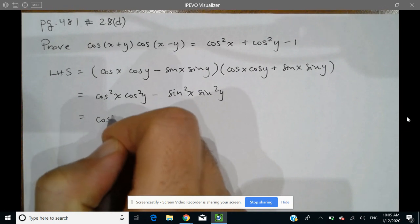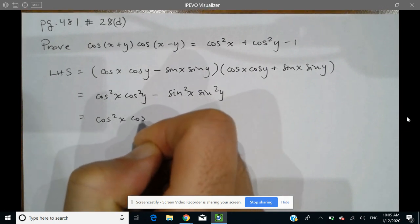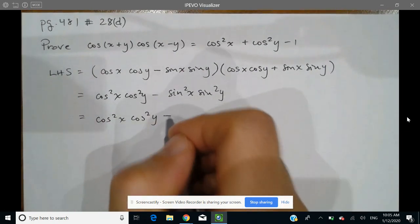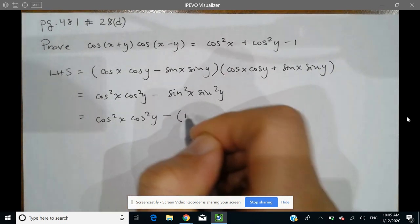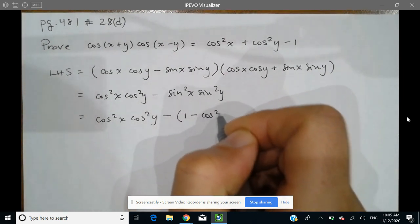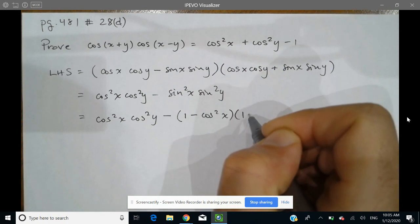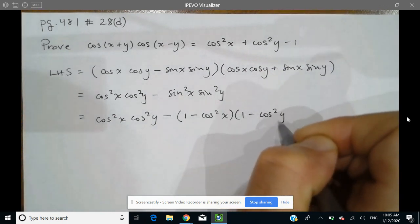So it makes sense to take these sine squareds and use the Pythagorean identity to turn them into cosine expressions. So this is cos squared x, cos squared y. I'm not going to change that, but I will change this into 1 minus cos squared x and this into 1 minus cos squared y.